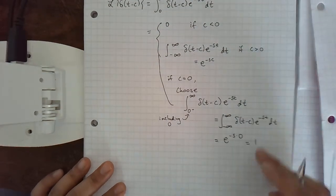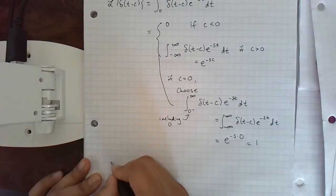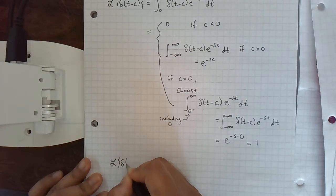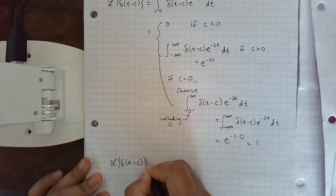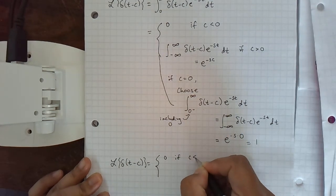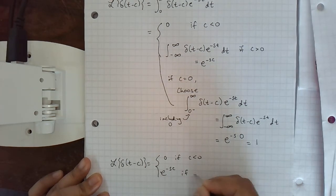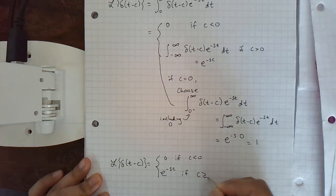But also notice it's e to the negative s times zero. So in summary, we can say the Laplace transform of delta of t minus c is zero if c is less than zero, and e to the negative sc if c is greater than or equal to zero.